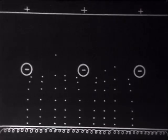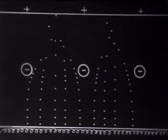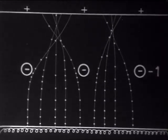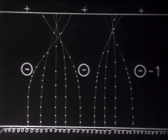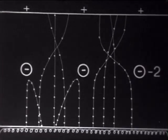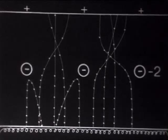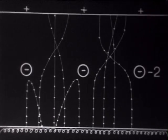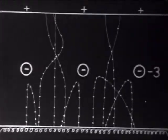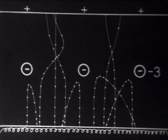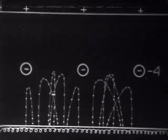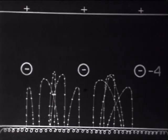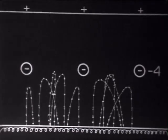Electrons that are emitted from the cathode move along paths of this type. If the grid voltage is lowered to 2 volts, the bending of the electron path becomes sharper. If the grid voltage is lowered further, the anode current is entirely cut off.